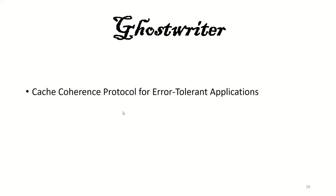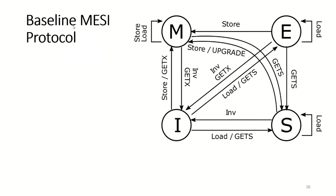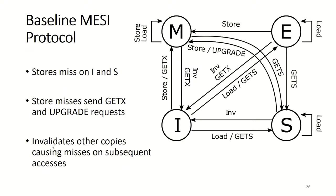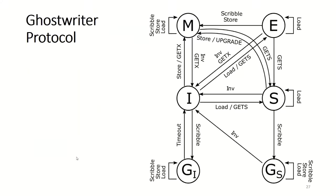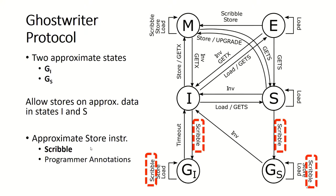Thus, we propose Ghostwriter, a cache coherence protocol for error-tolerant applications that exploits inherent value similarity to mitigate false sharing. We build Ghostwriter off of the baseline MESI protocol. For the conventional protocol, stores miss on the invalid and shared states, sending GetX and upgrade requests to transition the cache line into the modified state, which invalidates other copies and causes misses on subsequent accesses. The Ghostwriter protocol extends MESI by adding two new approximate states, G_I and G_S, which allow stores on approximatable data in states I and S. Approximatable data is determined by a user-defined d-distance. We also introduce approximate store instructions, called scribbles, which annotate which data is approximatable via programmer annotations or the compiler.